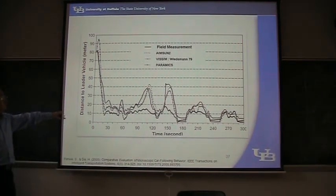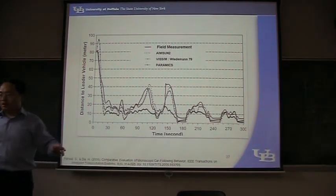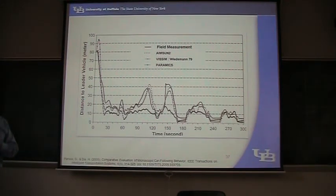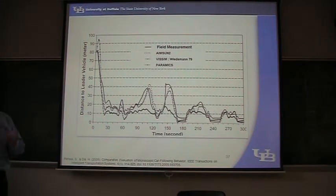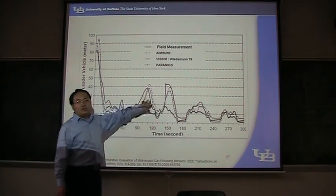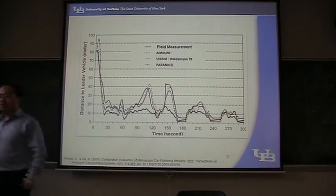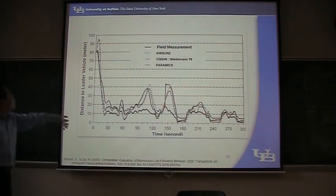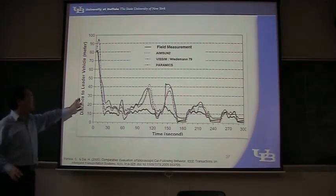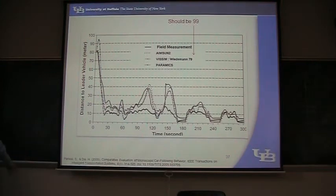From this figure, we can visually identify that PARAMICS works not very well. I didn't mention what category of car-following model PARAMICS is using — it doesn't belong to any model in the literature, or at least it doesn't mention that. You can see it's not fitting well to the field observation. The parameter is generating this curve, so it's less accurate. This figure represents how they can replicate delta X — delta distance.